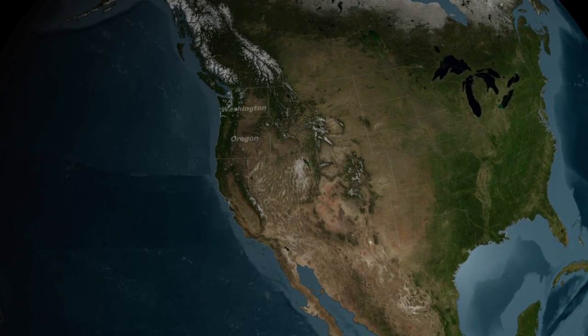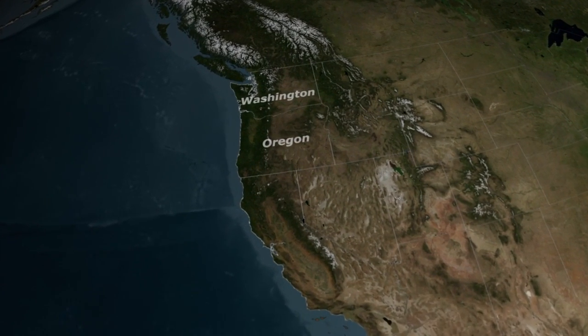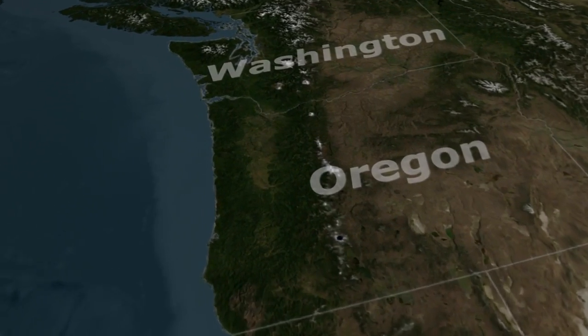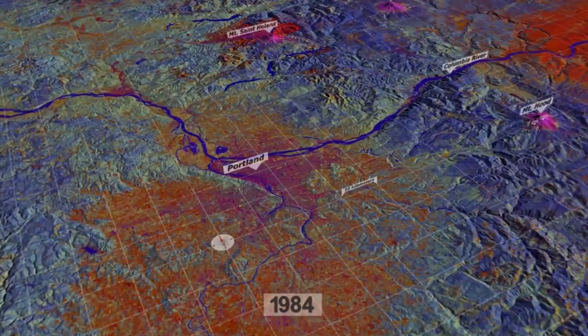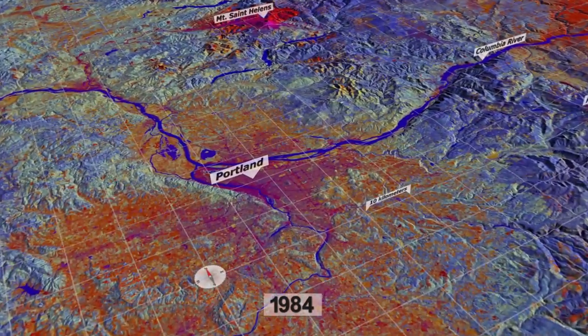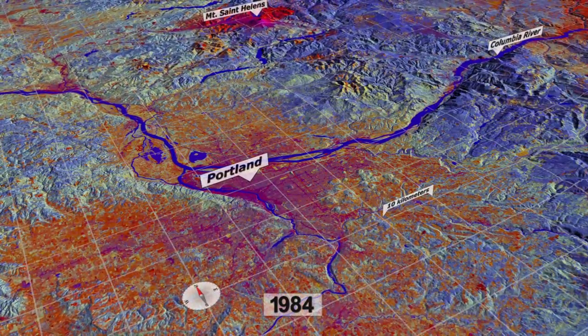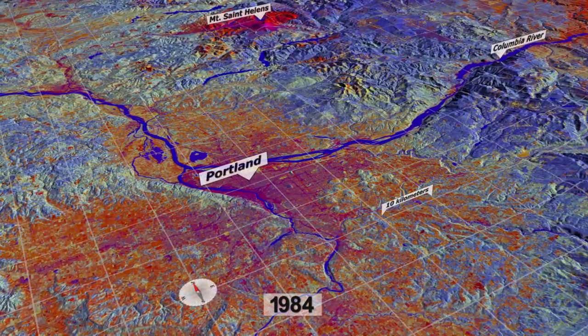My name is Robert Kennedy. I'm an assistant professor in the Department of Earth and Environment at Boston University. All of these images are numbers. Now we can display them on a monitor as different colors, but what we work with analytically are the numbers themselves.